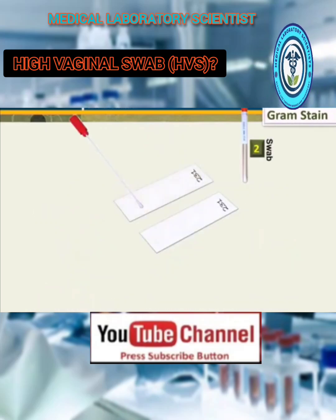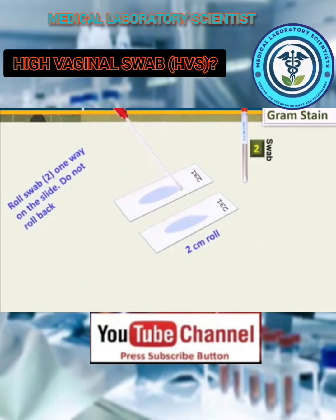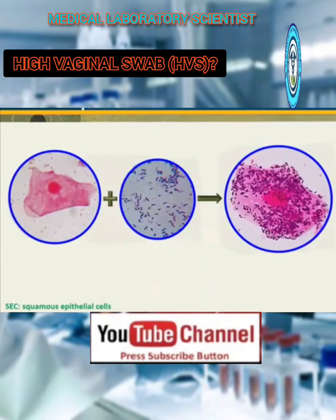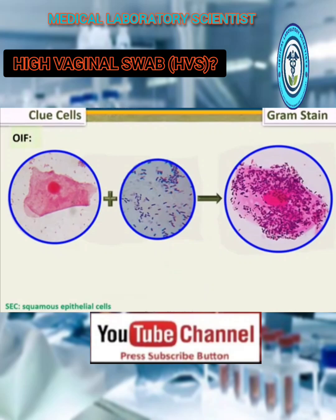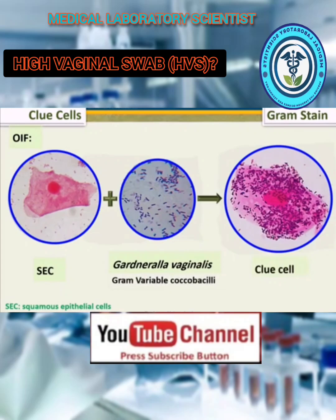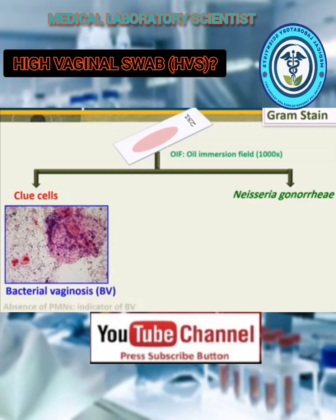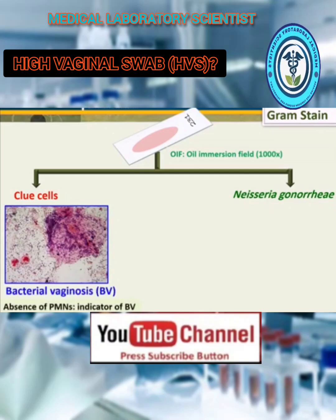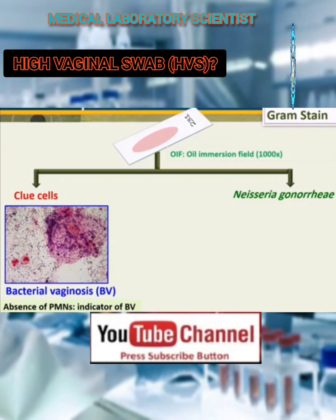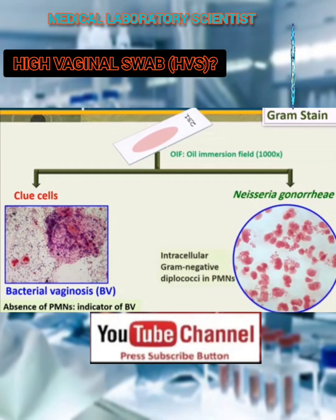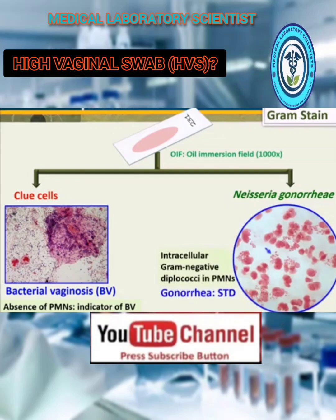For gram stain, roll swab two one way on the slide — do not roll back — then perform the gram stain according to protocol. A clue cell is an epithelial cell covered with Gardnerella vaginalis. Under oil immersion, look for clue cells that indicate bacterial vaginosis; absence of PMNs is also indicated in bacterial vaginosis. Also look for Neisseria gonorrhoeae — intracellular gram-negative diplococci within PMNs — indicating gonorrhea, an STD.